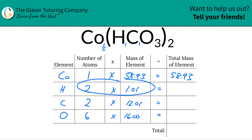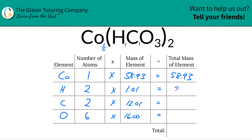For hydrogen, each hydrogen is 1.01 units of mass, but we have two of them, so the total mass is 2.02. For carbon, that multiplication gives us 24.02. And for oxygen, that works out to be 96.